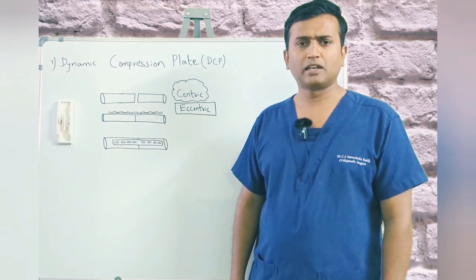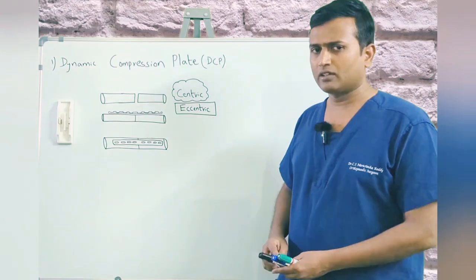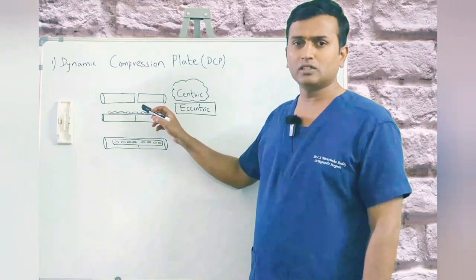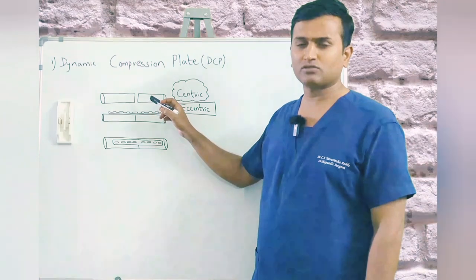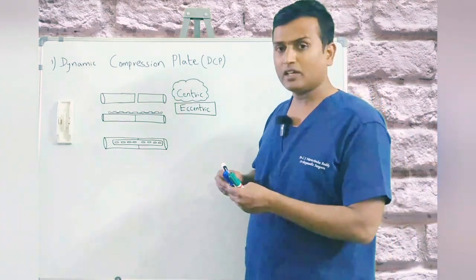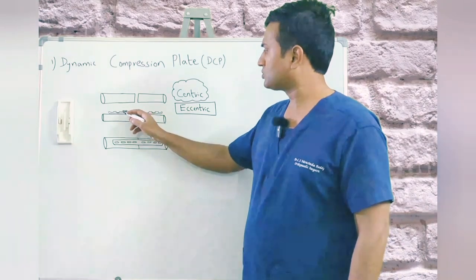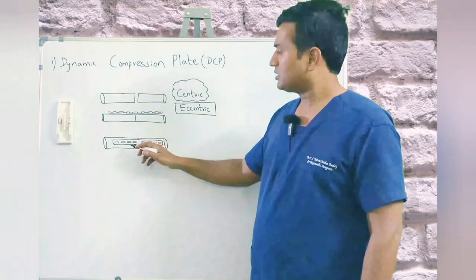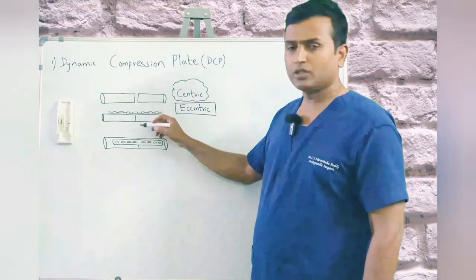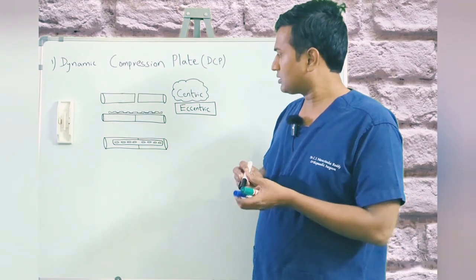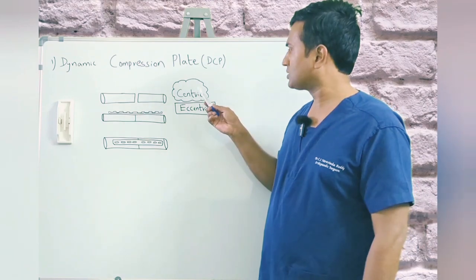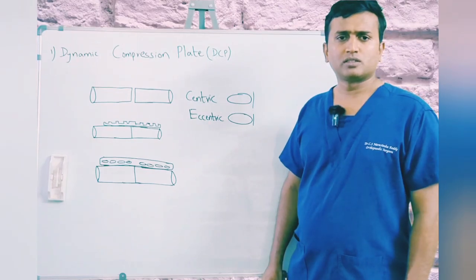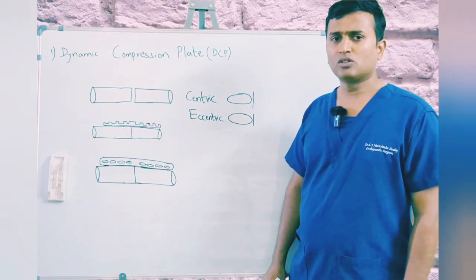Now we are going to see the working mechanism of the dynamic compression plate. Suppose we have a bone with a transverse fracture — we will see how the DCP helps in fixing it. We have an eight-hole plate, and we should also know two terms: centric and eccentric.